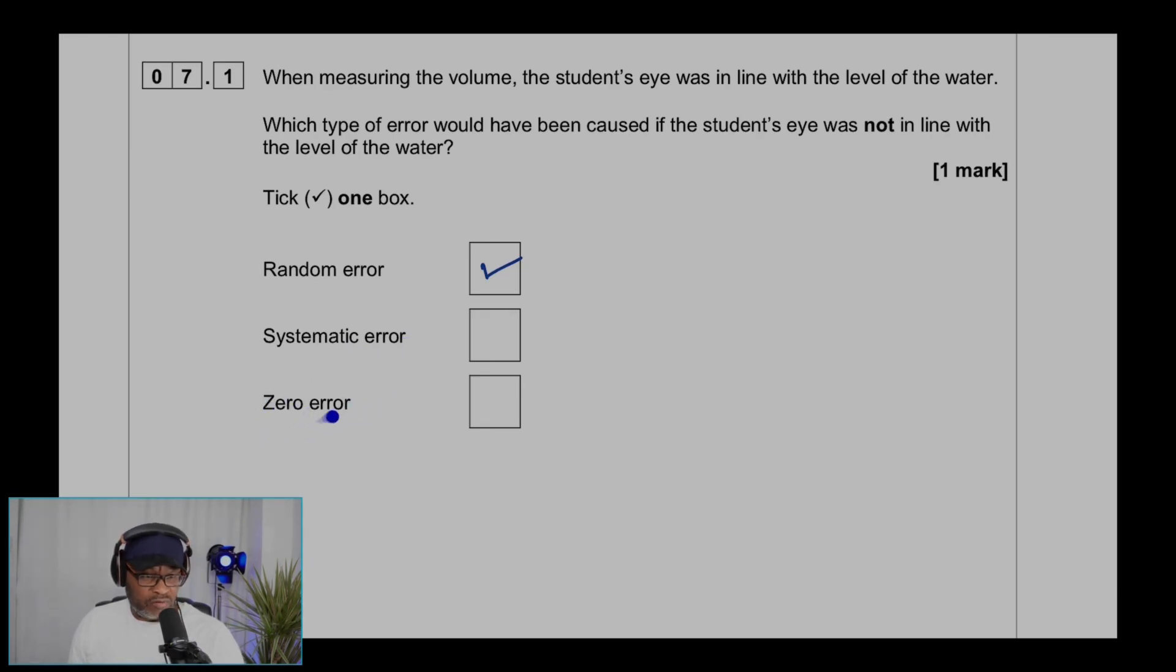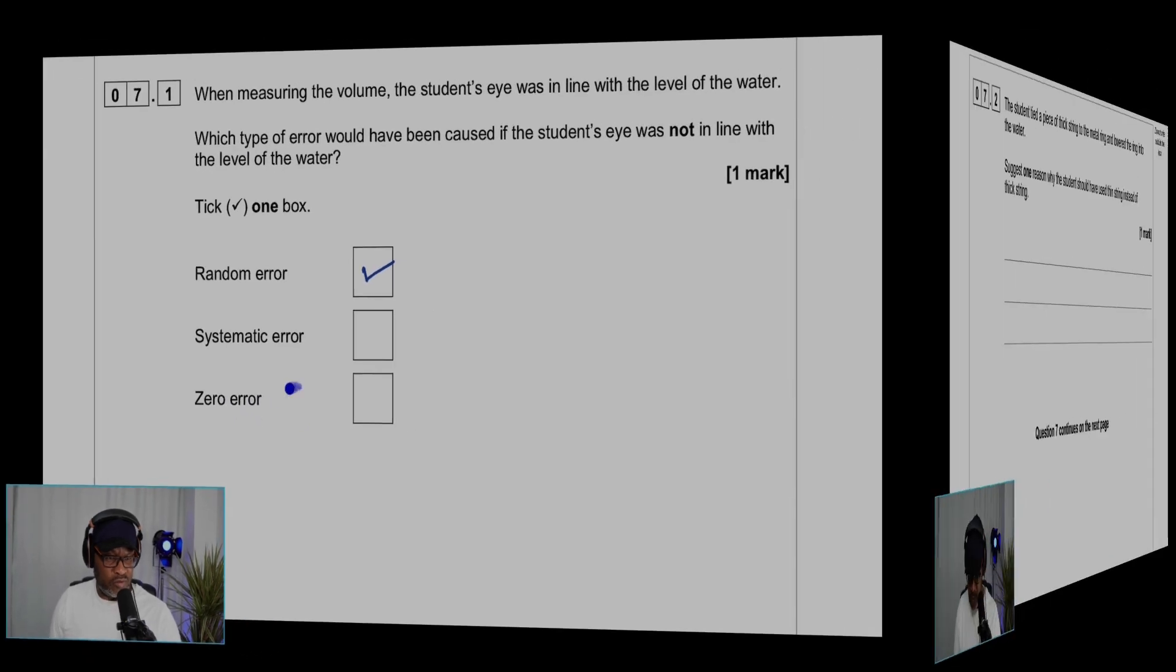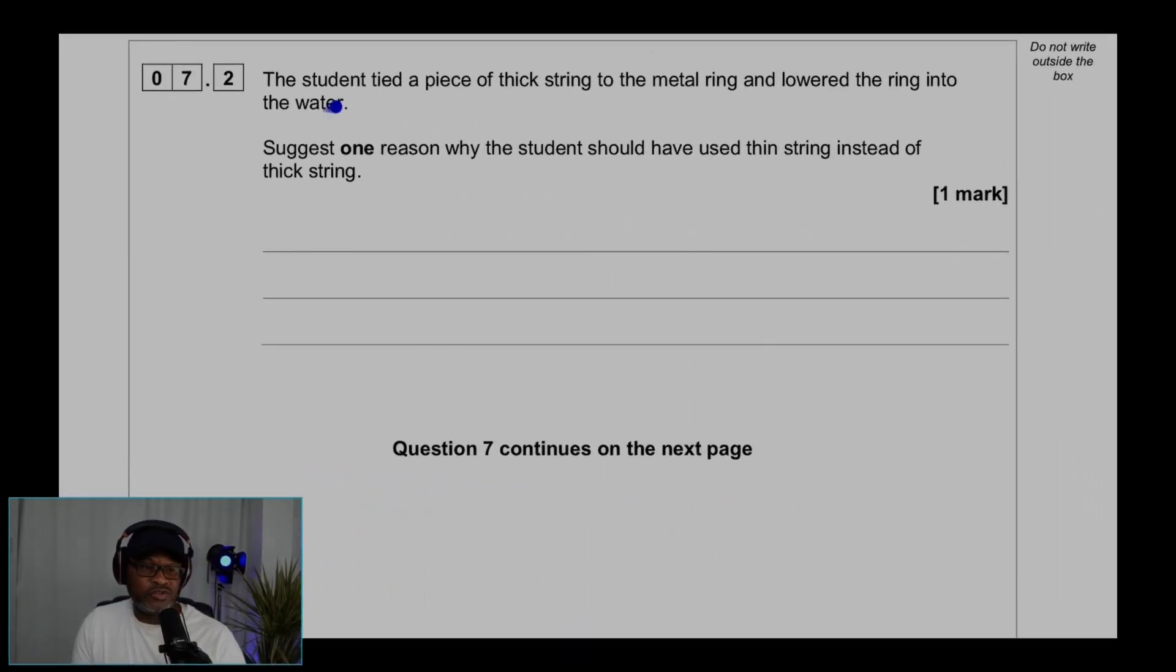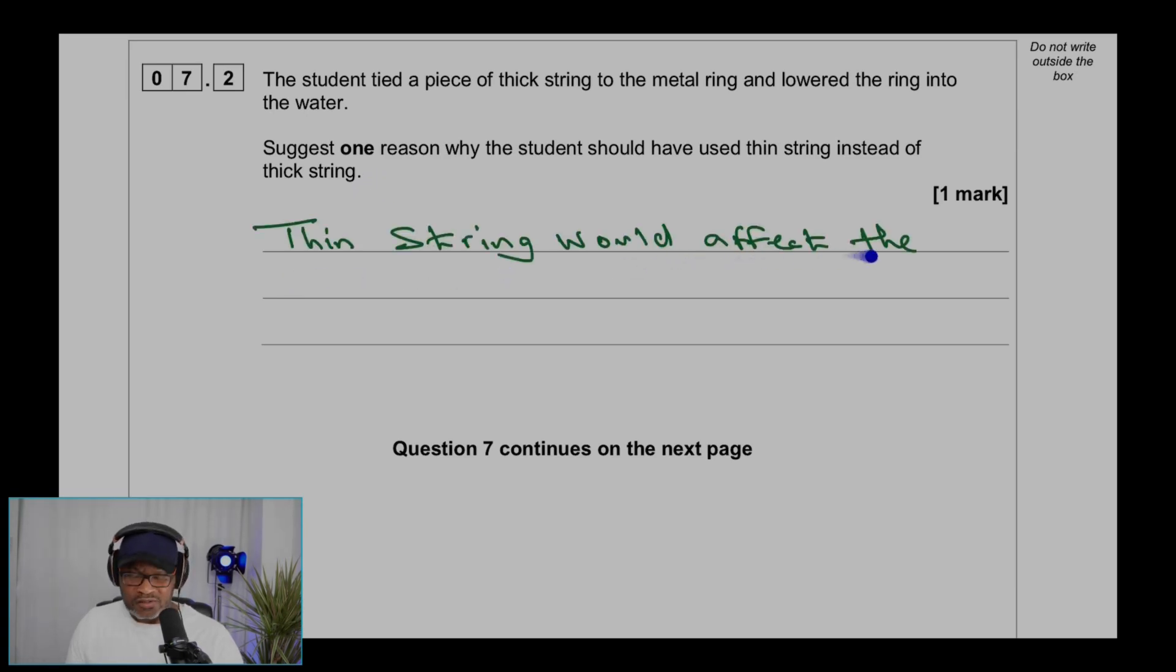Question 7.2: The student tied a piece of thick string to the metal ring and lowered the string into the water. Give one reason why the student should have used a thin string instead of thick string. Thin string would affect the volume measurement less than the thick string because of the mass of the string.